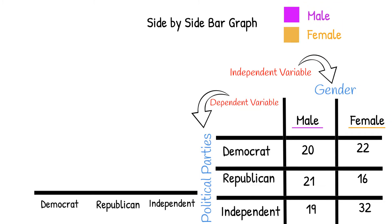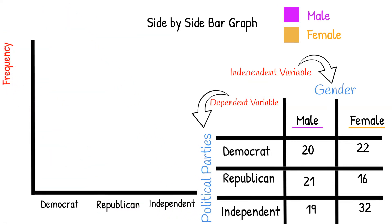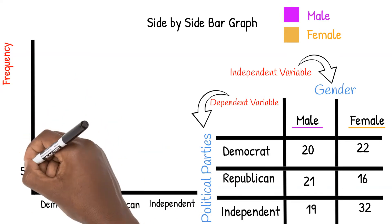Once you've determined how to display each of your variables, it's time to set up your frequencies on the y-axis. Since our highest frequency in this example is 32, let's count by fives.